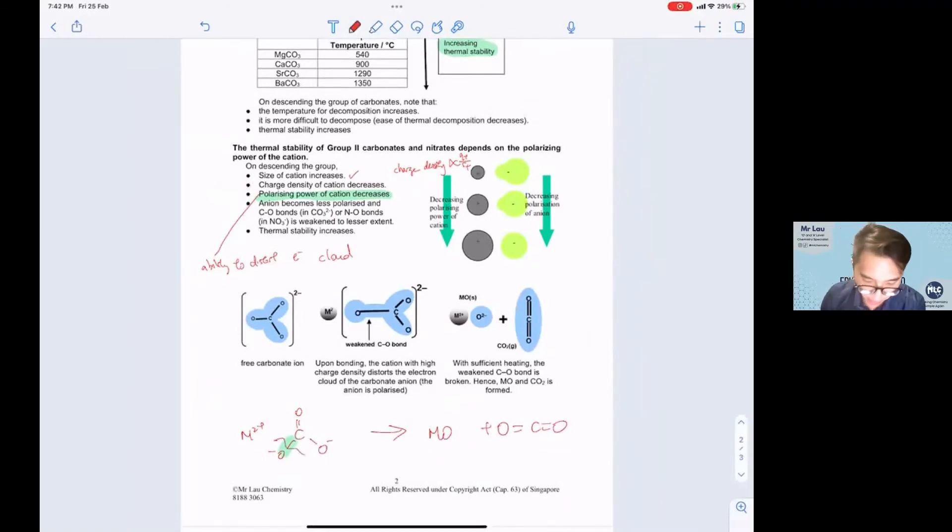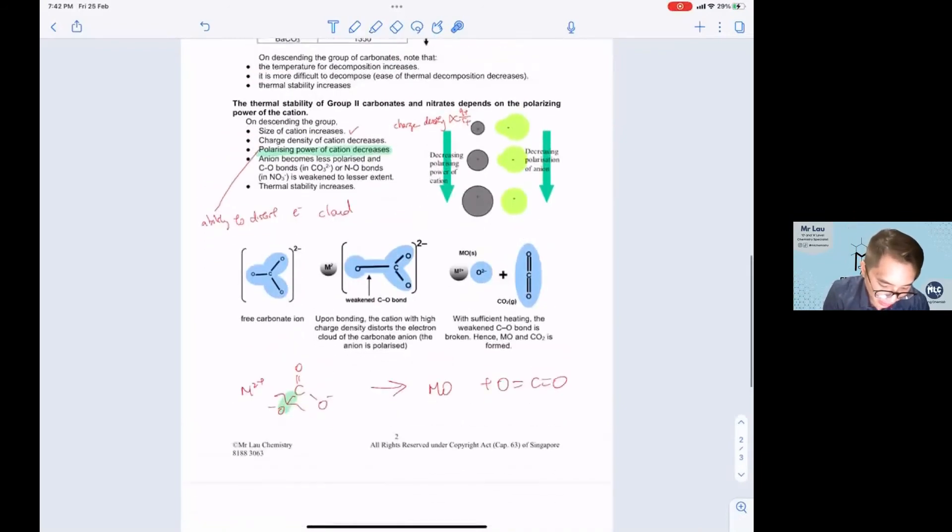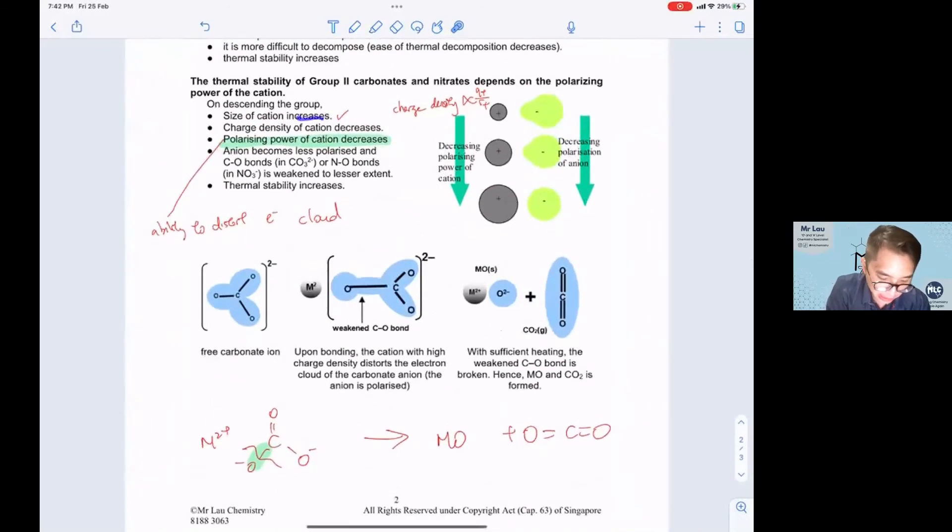In order to break this bond, your M2+ will polarize this anion and pull the electron cloud. When it pulls this electron cloud it will weaken this bond. Down the group, when your cation increases, the charge density will decrease and therefore the polarizing power decreases as well, so it is less able to polarize this electron cloud.